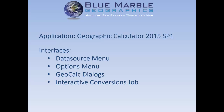This session is geared towards the beginner to intermediate level user just getting to know the calculator, probably more from the Global Mapper side. We're going to be looking mostly at the calculator — the data source menus, the options menus where we configure basic workspace preference settings and administration tools, the GeoCalc dialogues for coordinate system selections, datum transformations, and applications of those on the interactive conversions job, as examples before we move into the next session, which will be posted sometime next week.